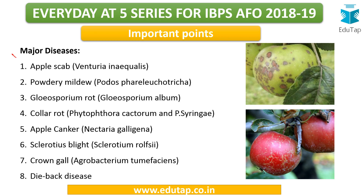Major diseases are very important. Try to read through these names at least two or three times so you can recognize the options in the exam. Key diseases include: apple scab, powdery mildew — which affects many fruit crops — collar rot, apple canker, sclerotinia blight, crown gall, and die-back disease.